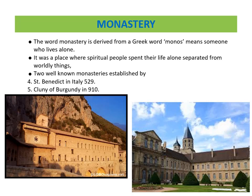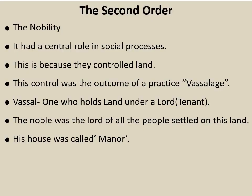Two well-known monasteries were established by Saint Benedict in Italy in 529 and Cluny of Burgundy in 910. The second order: the nobility. It had a central role in social processes because they controlled land. This control was the outcome of the practice of vassalage — a vassal being one who holds land under a lord, that is, a tenant. The noble was the lord of all the people settled on his land, and his house was called a manor.